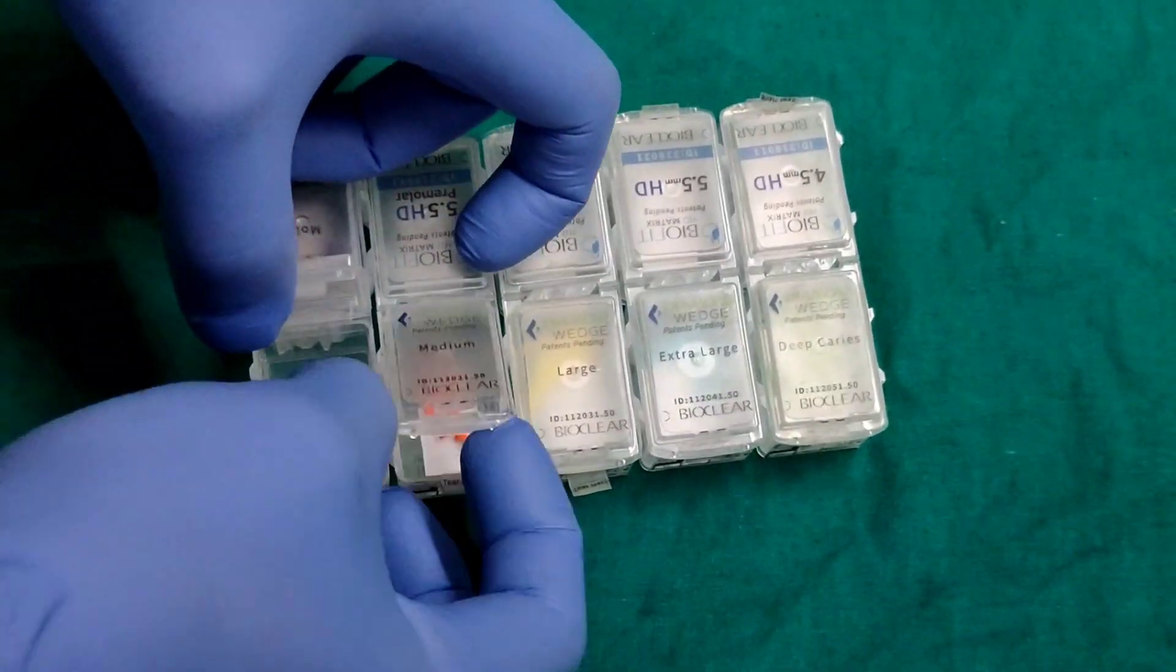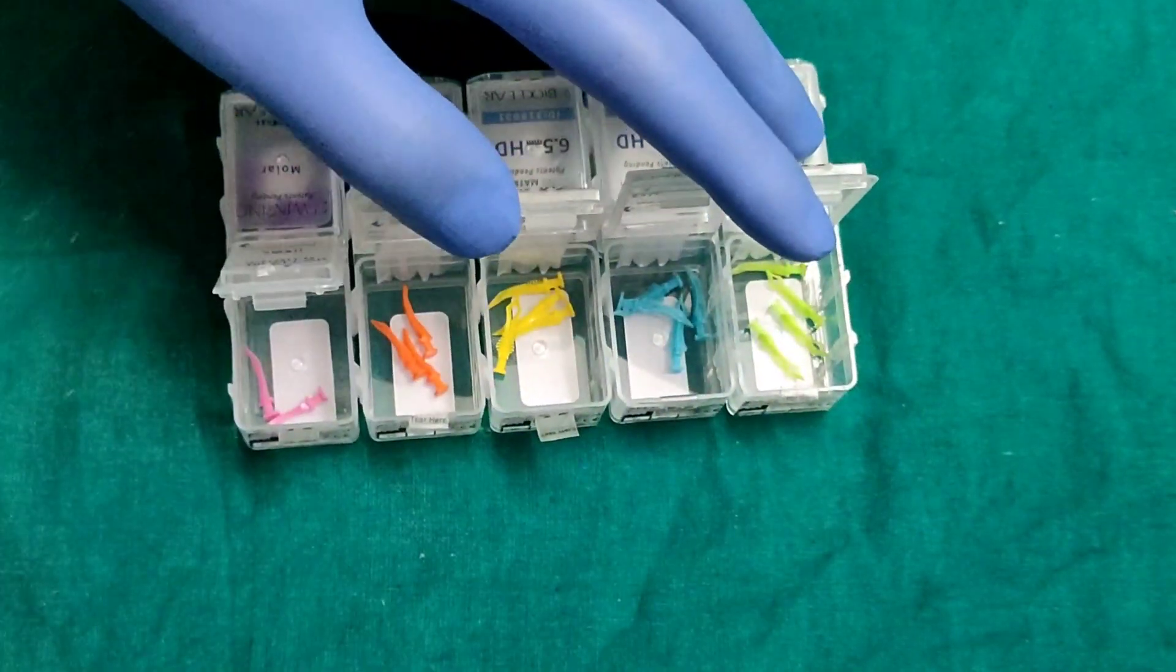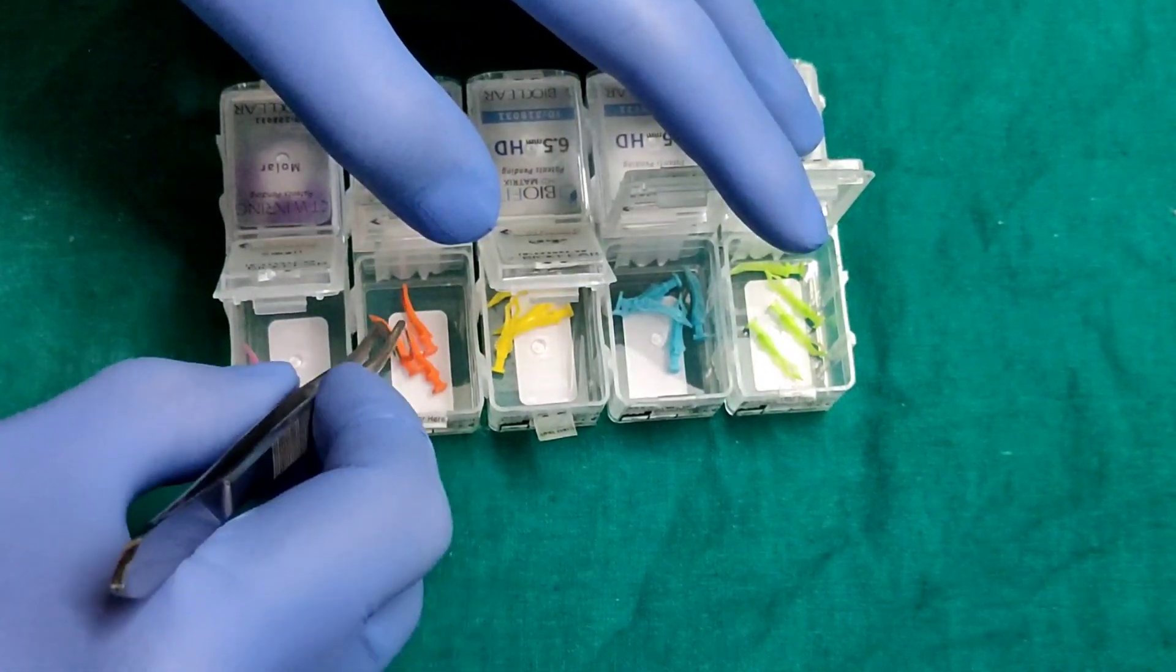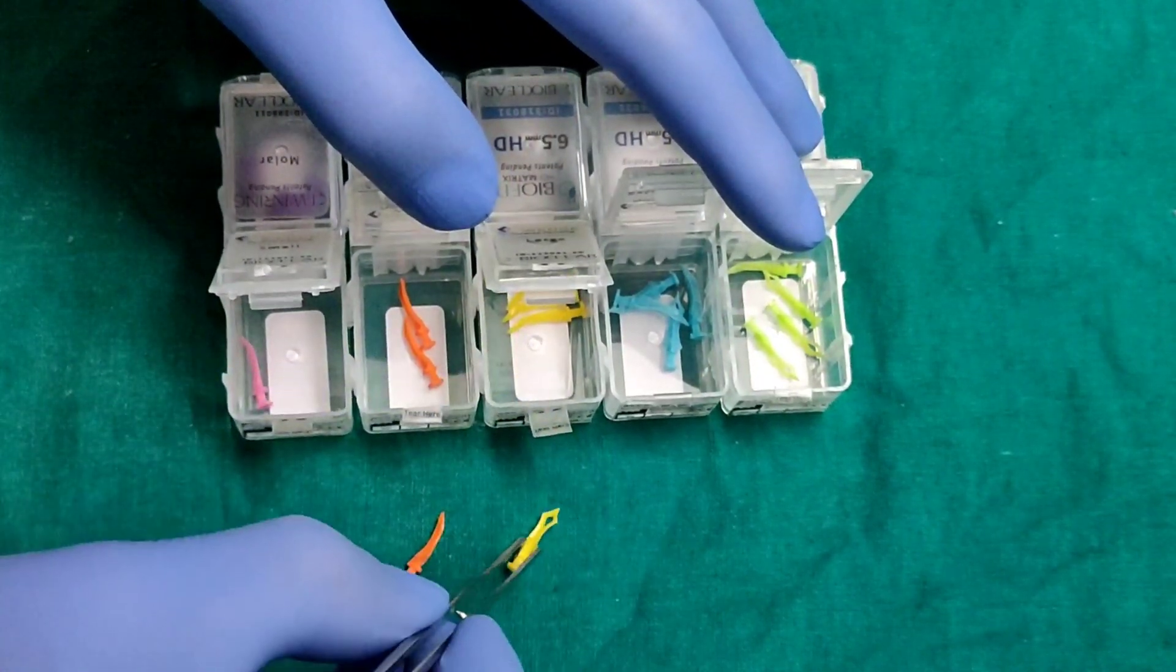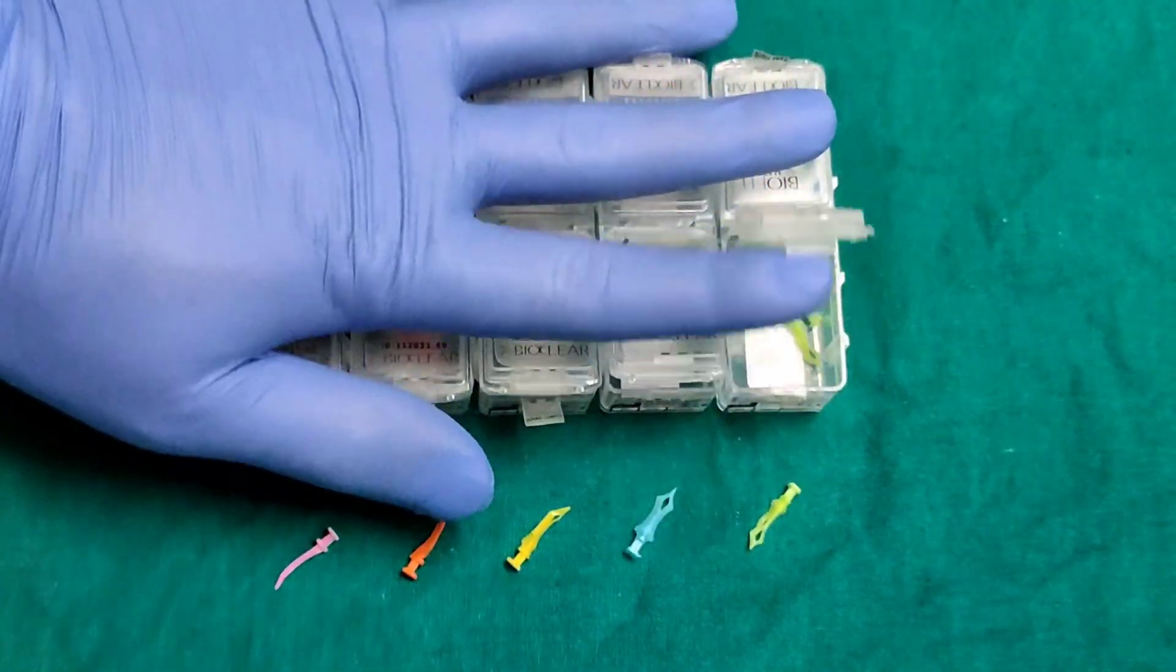Then coming to the BioClear diamond wedges. These wedges come in various sizes: small, medium, large, extra-large, and deep caries. We can use it according to the size of anatomic embrasure.